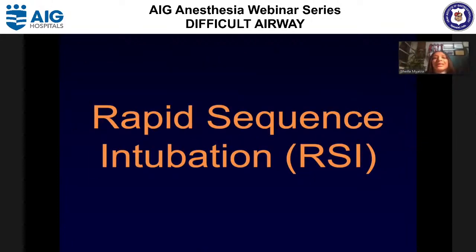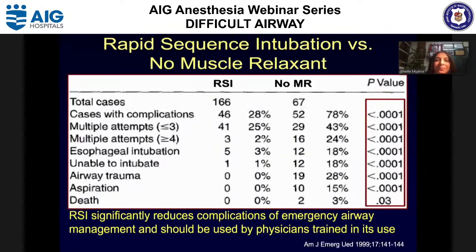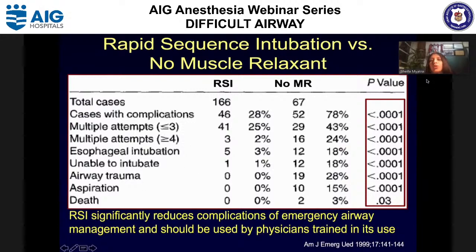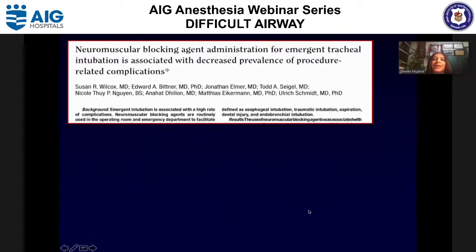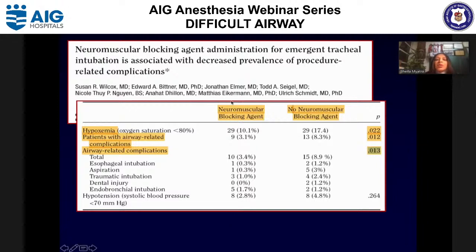For rapid sequence intubation: critically ill patients are considered full stomach due to gastroparesis of critical illness. An older study comparing RSI versus no muscle relaxant showed that complications were much lower when muscle relaxant was given. A more recent study confirmed neuromuscular blockade significantly reduces complications of emergency airway management. Comparing succinylcholine versus rocuronium, there was no difference in first-attempt intubation success, Cormack-Lehane grade, or POGO score. The key message: RSI benefits this high-risk group.